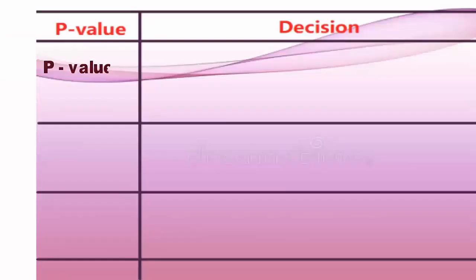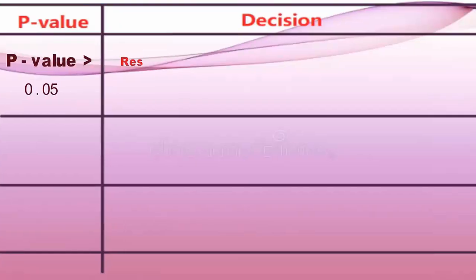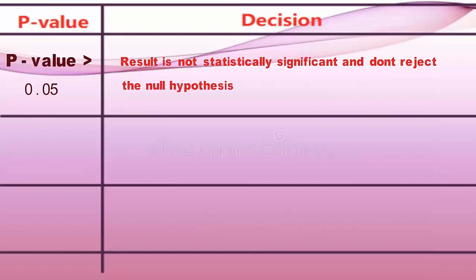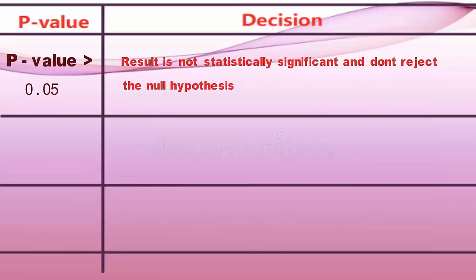The P-value table shows the hypothesis interpretations. P-value greater than 0.05: The result is not statistically significant and hence don't reject the null hypothesis.